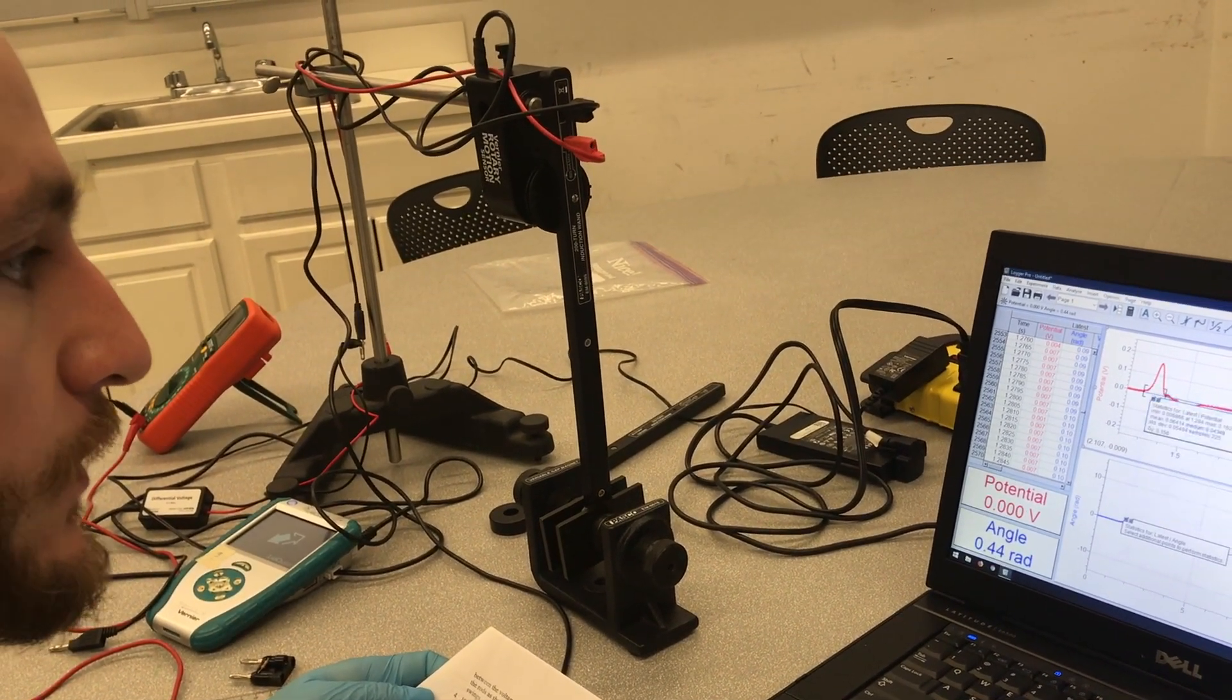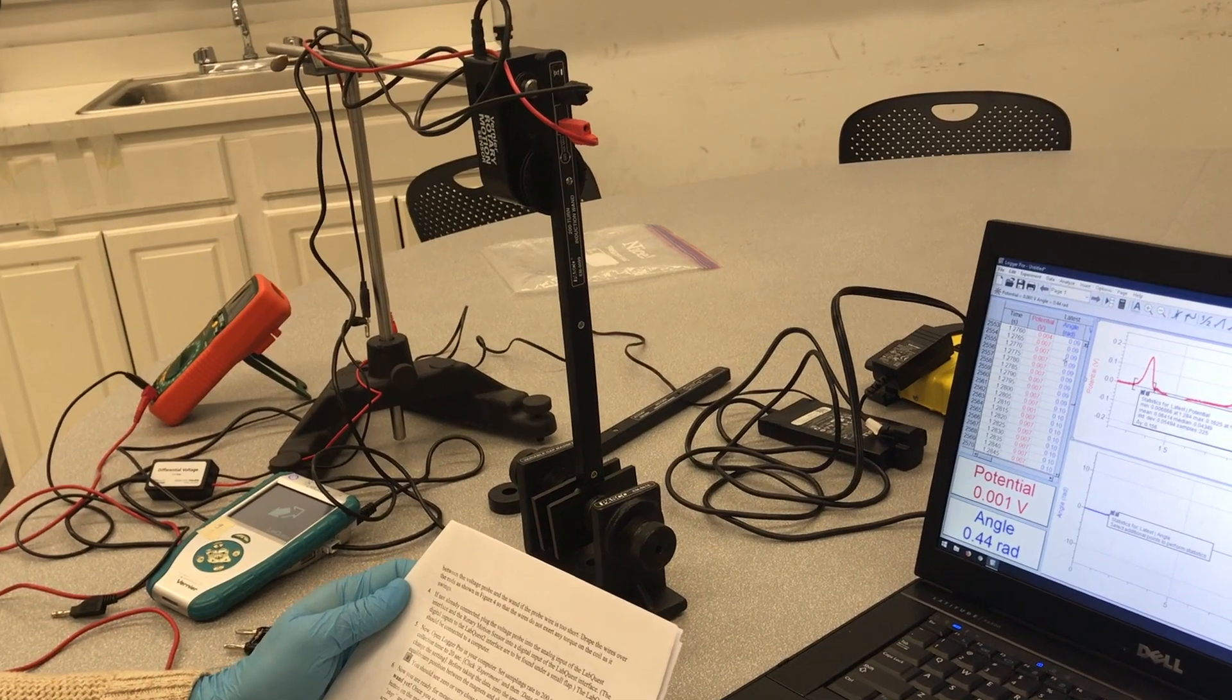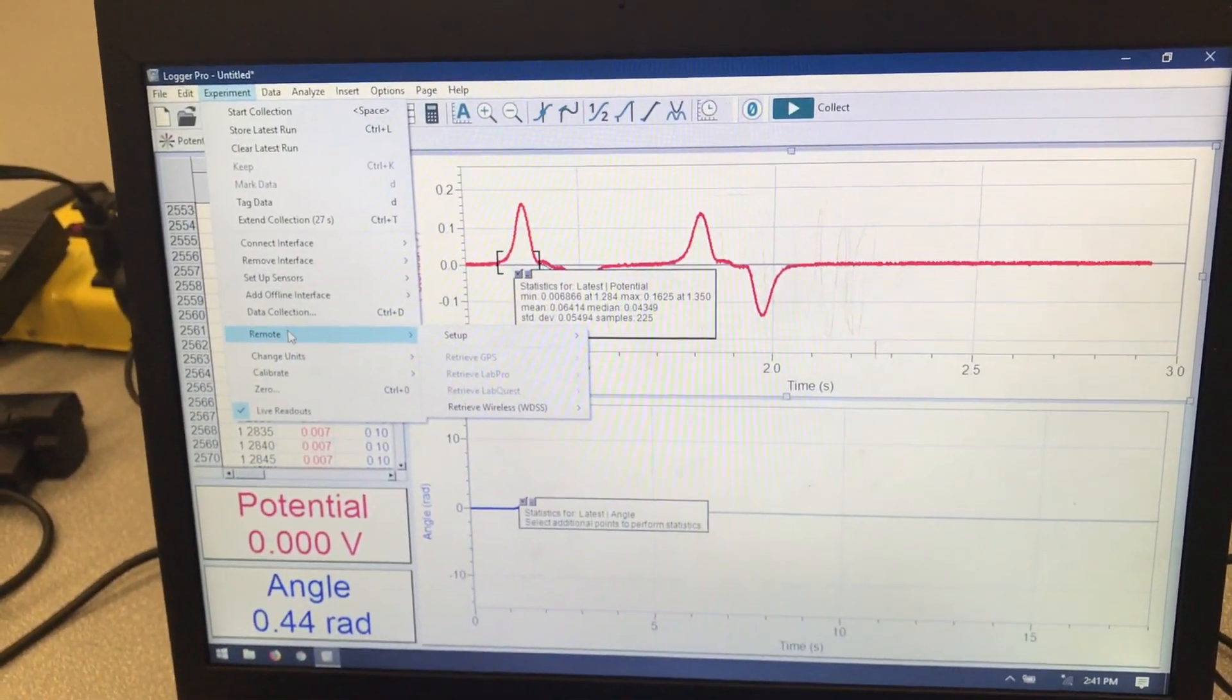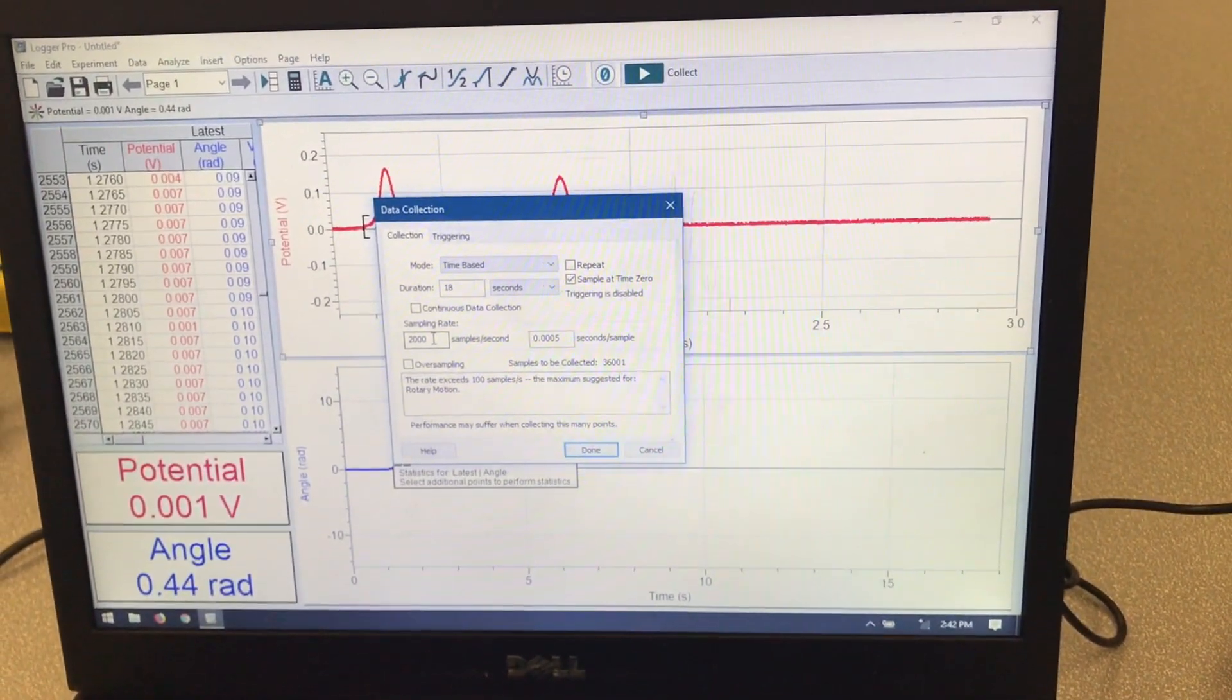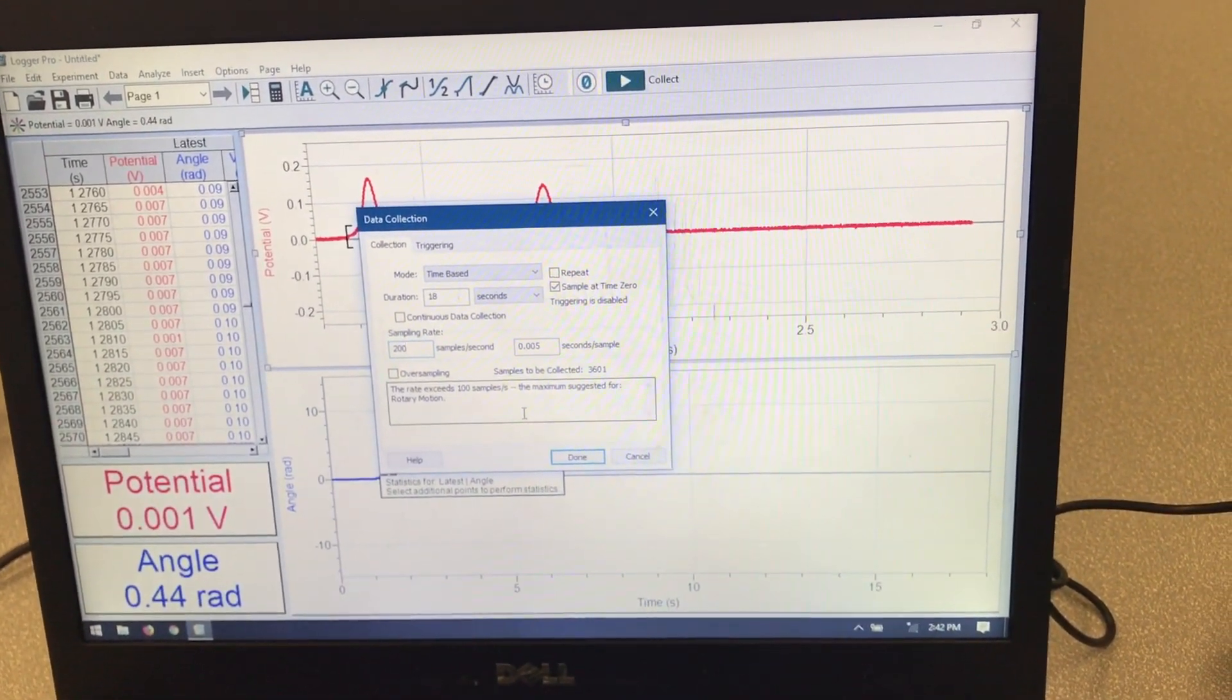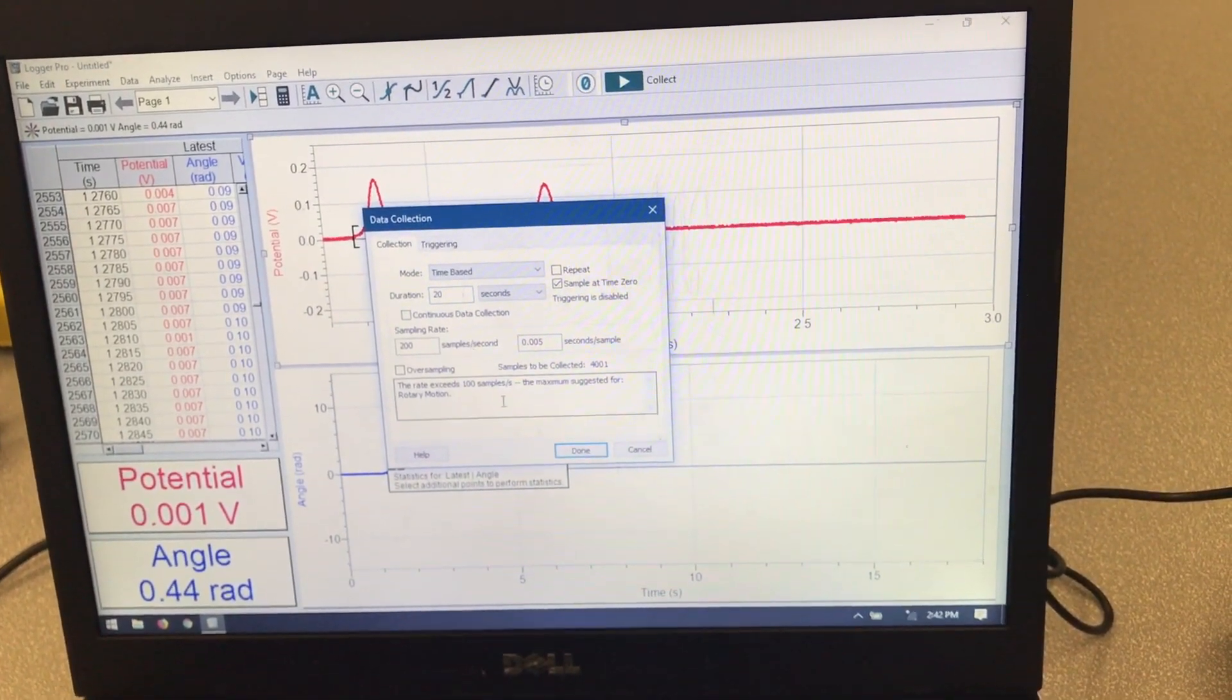And now we should reset to go ahead and get this all set up. So I'll close this out. We're going to log our probe. We need to set the sampling rate, so I'll just double check this. Experiment. And then data collection. We'll need to set the sampling rate to 200 samples per second. Take that to 200. And the duration, or the sampling time, we're going to set to 20 seconds. Okay. So that takes care of that.